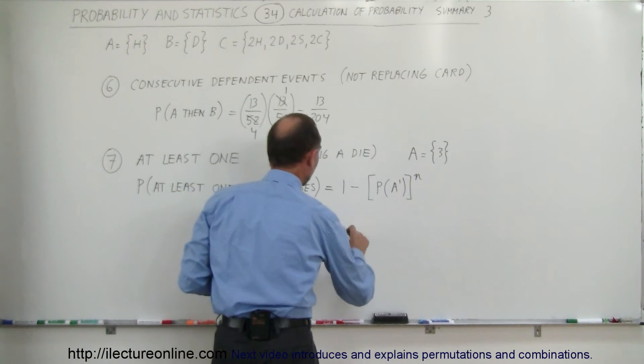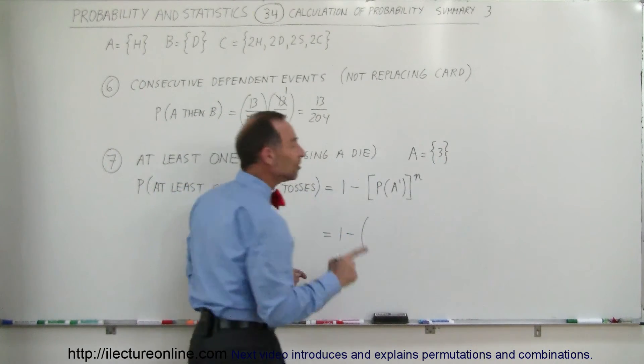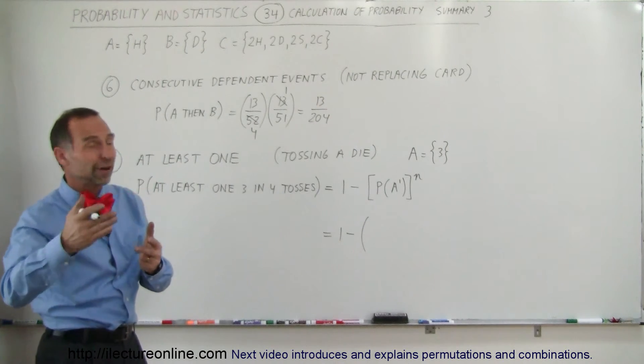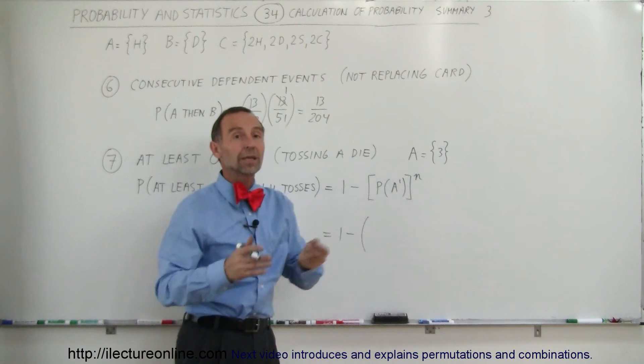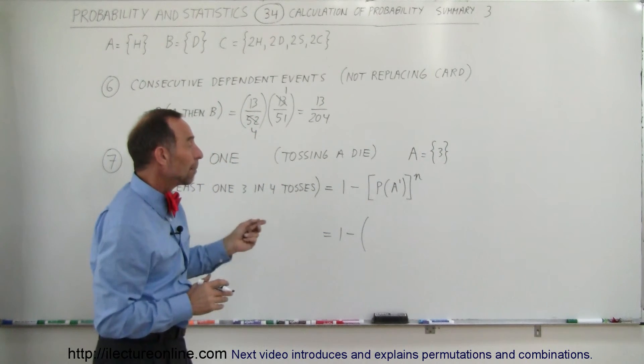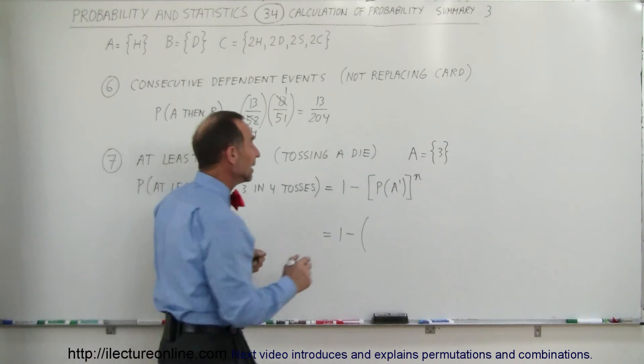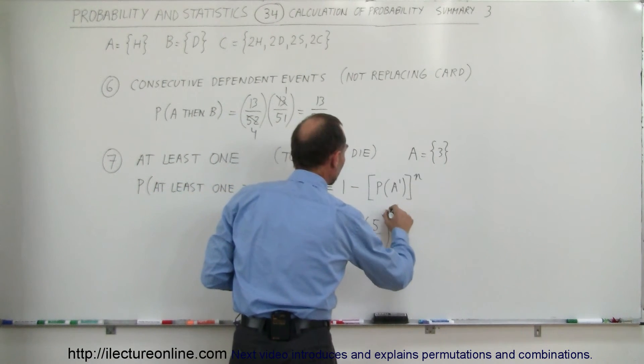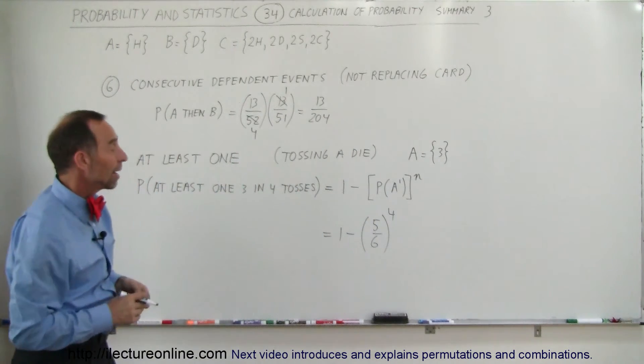So in this case, that would be equal to 1 minus the probability of not getting an A. Well, the sample space is 1 through 6. A is 3, so not an A would be everything but 3, that would be the five other outcomes. So the probability of getting not A is 5 out of 6, and now we have to raise that to the 4th power because we're going to try four times.